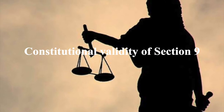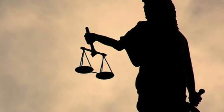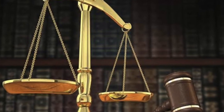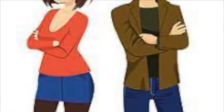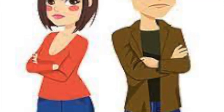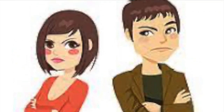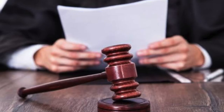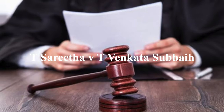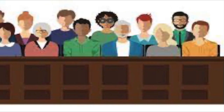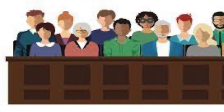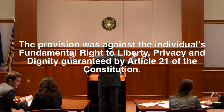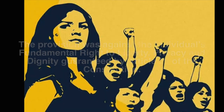There is always a question of the constitutional validity of Section 9. It has been contended in many cases that Section 9 of the Hindu Marriage Act is violative of the right to privacy under Article 21, with wives stating that the section is misused by husbands to force them into living together against their wish. The earliest instance was the case of T. Sareta versus Venkat Super before the Andhra Pradesh High Court in 1983, where it was argued that the provision was against the individual's fundamental right to liberty, privacy, and dignity guaranteed by Article 21.